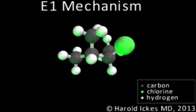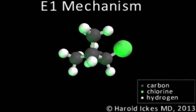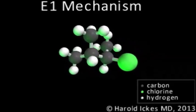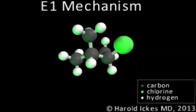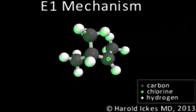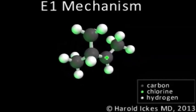The E in E1 stands for elimination, which refers to the loss of a leaving group, here the green ball representing chlorine. The 1 in E1 refers to the kinetics of the mechanism and means that the slowest step, the loss of the leaving group, is dependent on the chlorine-carbon chain alone. No other molecules are required.